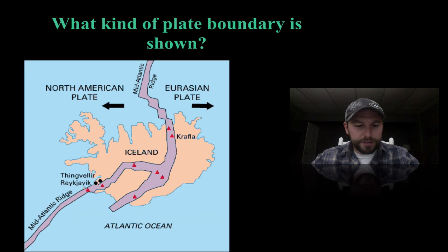Here is Iceland. Notice we have the North American plate moving one way, Eurasian the other. So here is a divergent plate boundary, they're moving away from each other.